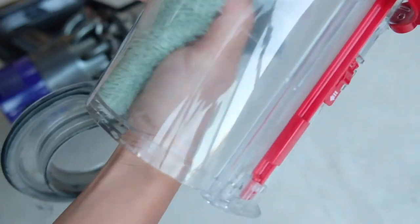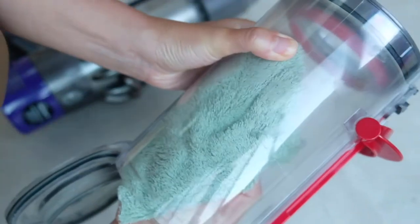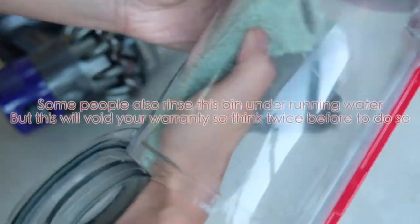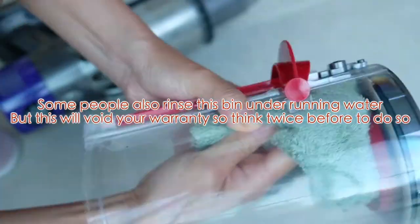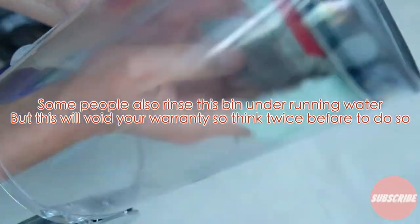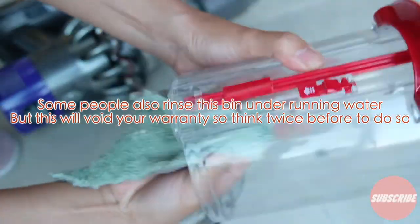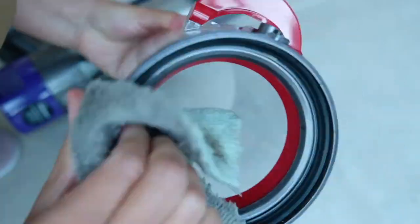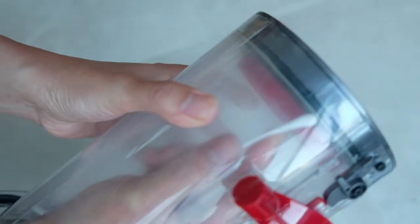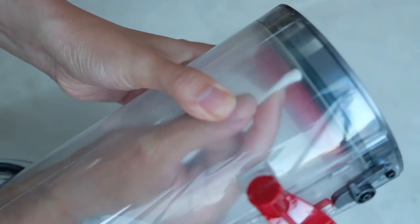I'm using the microfiber cloth again with solution to give it a rough wipe of the interior. Then you can use a cotton bud like I did to clean the corners of the rubber. But I'm not too fussed about here, to be honest, because it doesn't have much to do with the performance of the vacuum machine.